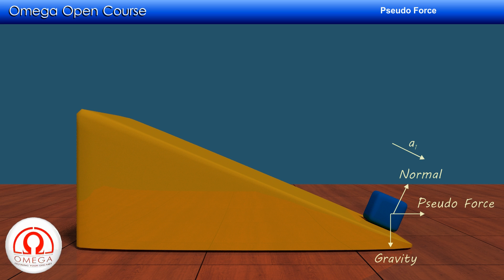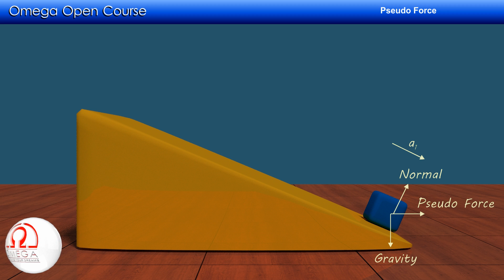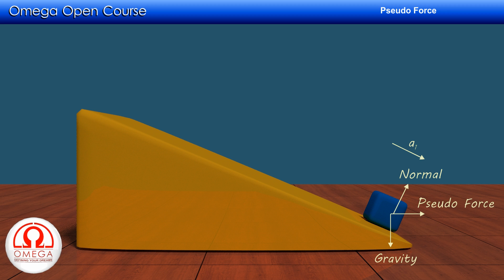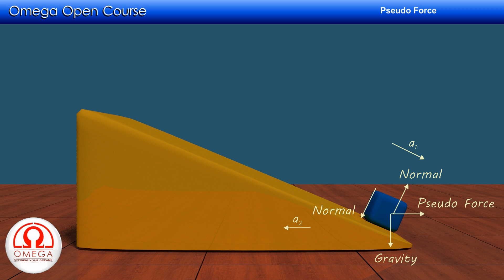Since we know the direction of motion of the wedge, we do not need to analyze it in the non-inertial frame. In its free body diagram, the only force having a horizontal component is the normal force, and that component causes its acceleration. We can then write equations and solve for the accelerations.